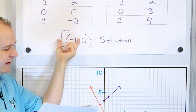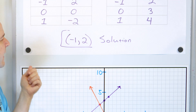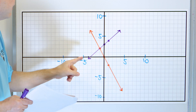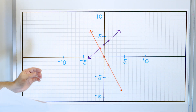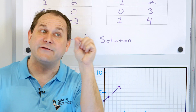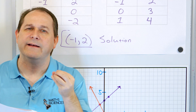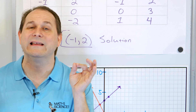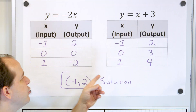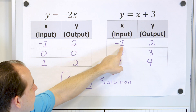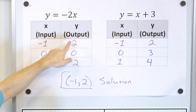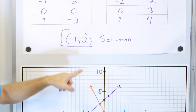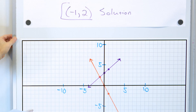The solution itself is actually the point negative 1 comma 2. The reason this is the solution is because that point is the only point in this entire grid that satisfies both lines at the same time — meaning this point lies on both lines. You can actually see this point in the tables. Even if we had chosen different x values, we would still see the intersection point being in the same place.